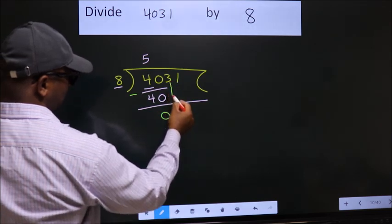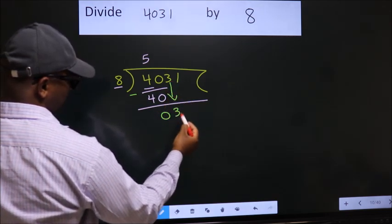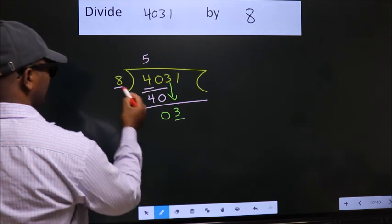After this, bring down the beside number. So, 3 down. Here we have 3. Here 8.